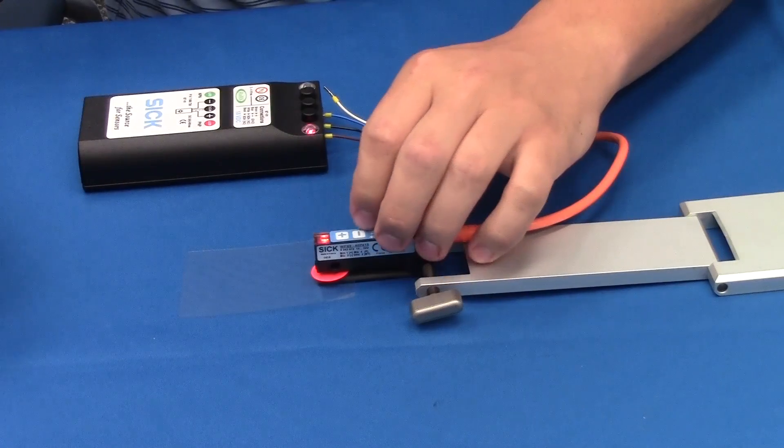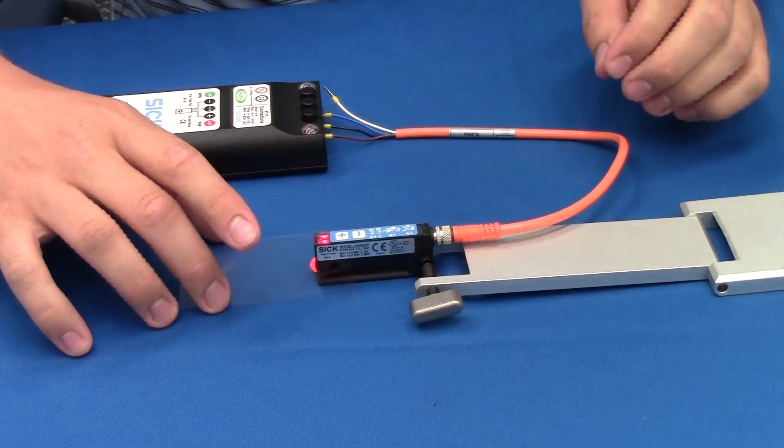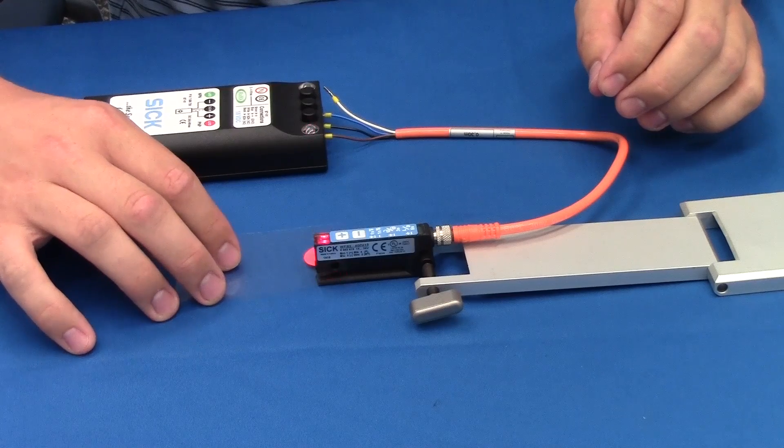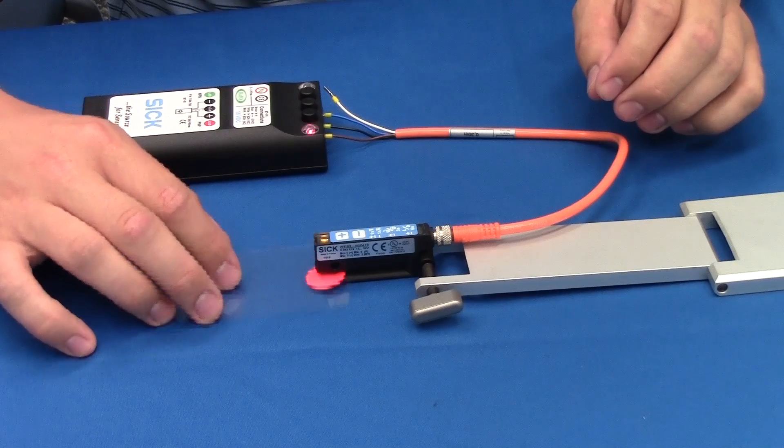We then let go, and in static teach, we right away press the minus button. Now going back and forth, we can demonstrate that the sensor switches on the label.